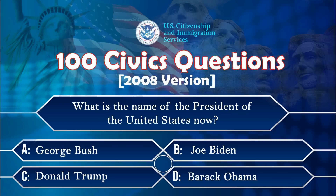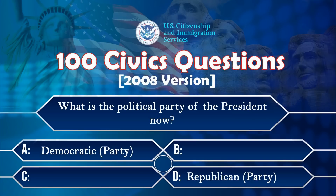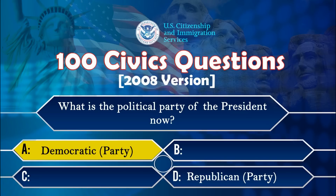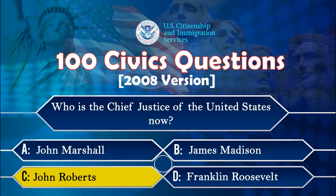What is the name of the president of the United States now? Joe Biden. What is the political party of the president now? Democratic. Who is the chief justice of the United States now? John Roberts.